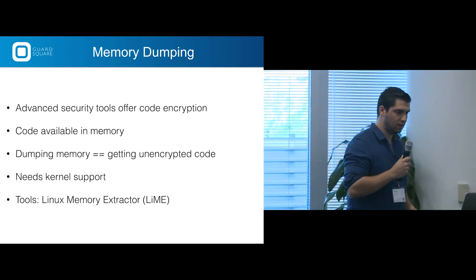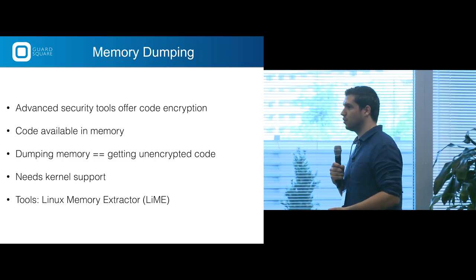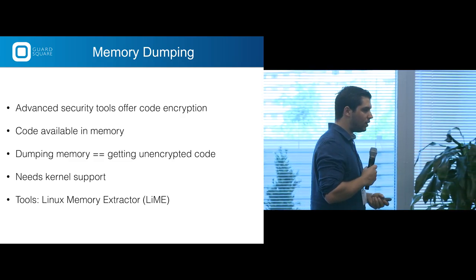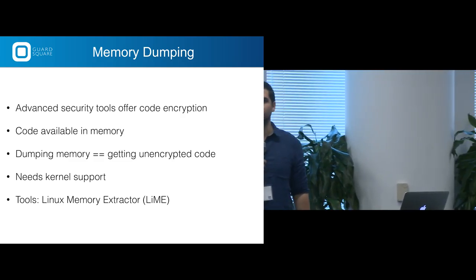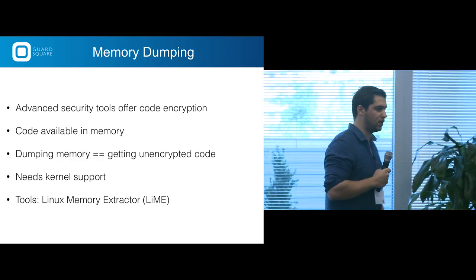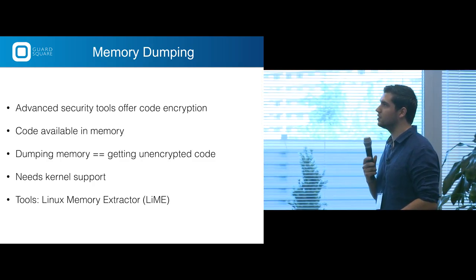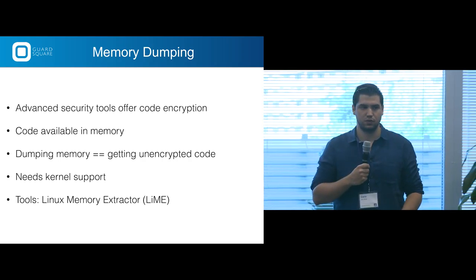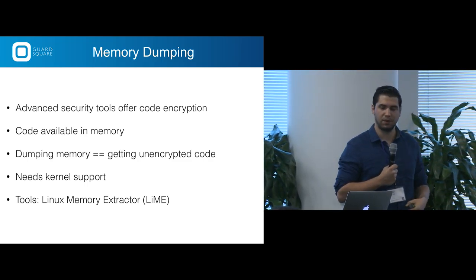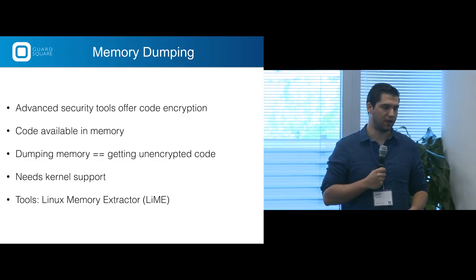Memory dumping is a more advanced technique. The more advanced security tools like DexGuard offer code encryption — this means the code is only available in memory and you have to dump memory to get to it. This needs kernel support, or you can use the Linux Memory Extractor (LiME), which lets you compile it for Android targets. If you want to pen test your own app — which is highly encouraged, you should always pen test before releasing — you might look at LiME for dumping memory.